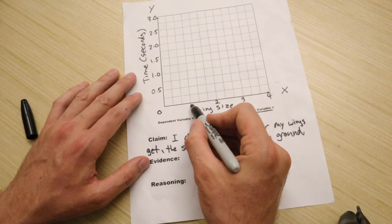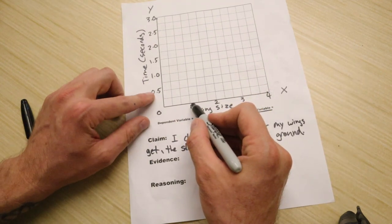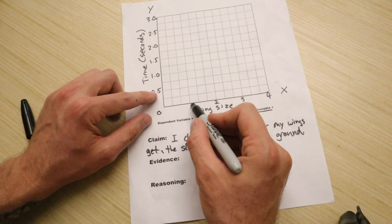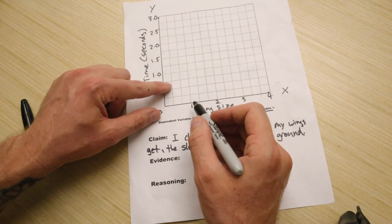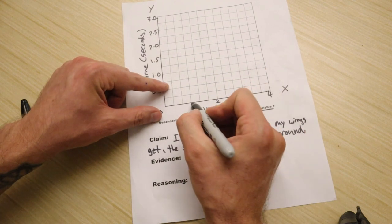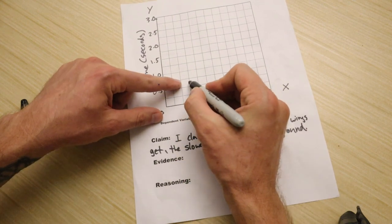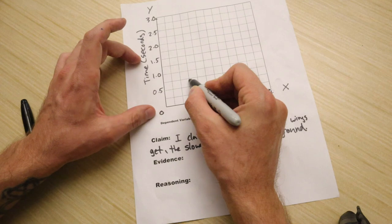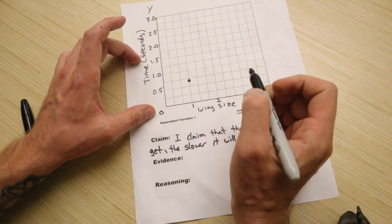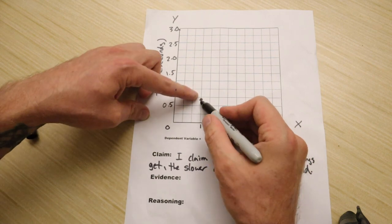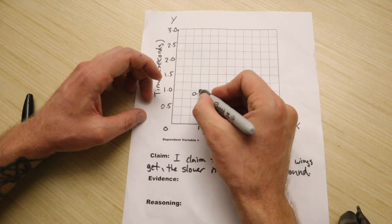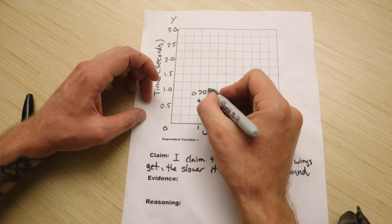So wing size 1 is 0.72 seconds. So 0.70, 70 is more than half, but not quite 1. So I'm going to guess it's going to be somewhere maybe right below this line. So I'm going to find where they intersect. Here's my wing size 1. And maybe about 0.70, I think, is maybe right about there. It's very important to make sure that your coordinates line up where they intersect. So I'm going to label this 0.70 seconds.